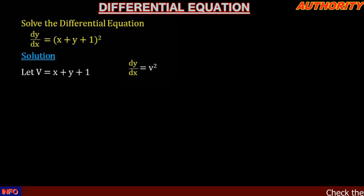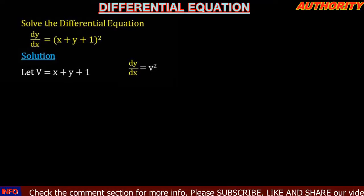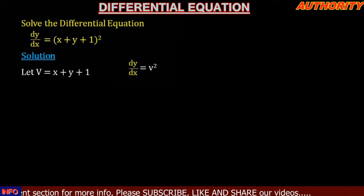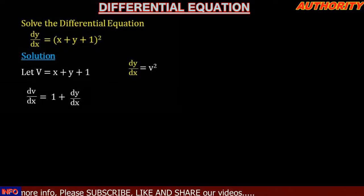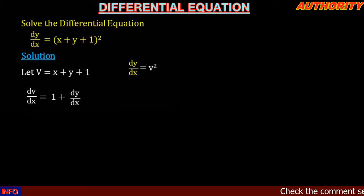So dy/dx = v². Now going back, since v = x + y + 1, let's differentiate this function with respect to x. We get dv/dx = 1 + dy/dx + 0, because differentiating x gives 1, differentiating y gives dy/dx, and differentiating the constant 1 gives zero.